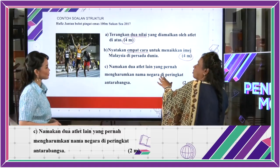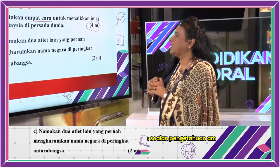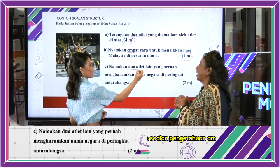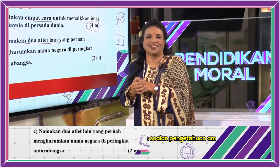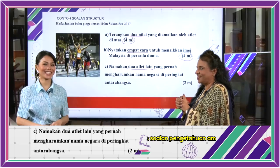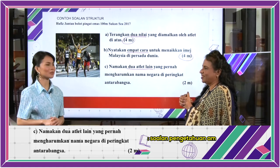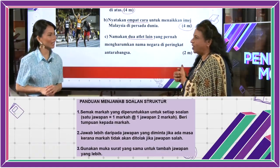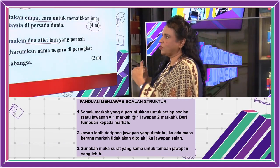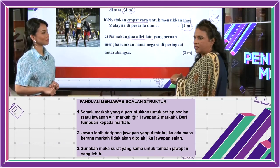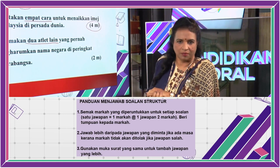Soalan C ialah soalan direct — pelajar tahu atau tak tahu. Namakan dua atlet lain yang pernah mengharumkan nama negara. Kamu masih ingat atlet-atlet tersebut? Antara mereka ialah Nicole David. Bagus — dengan ramai lagi atlet lain seperti Dato' Misbun Sidek dan sebagainya. Dalam soalan ini, bahagian A ialah soalan aras tinggi, manakala bahagian B dan C ialah soalan aras biasa.